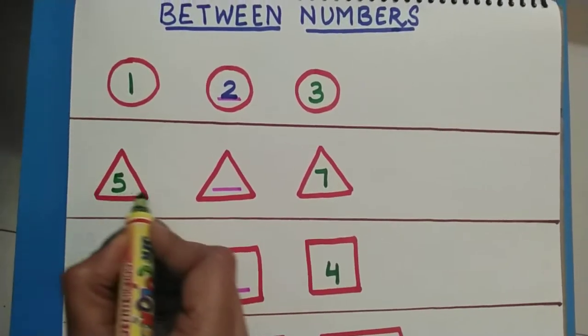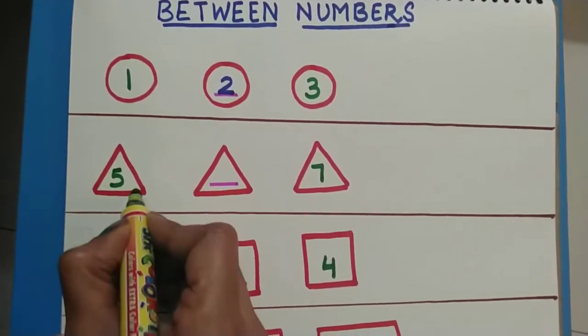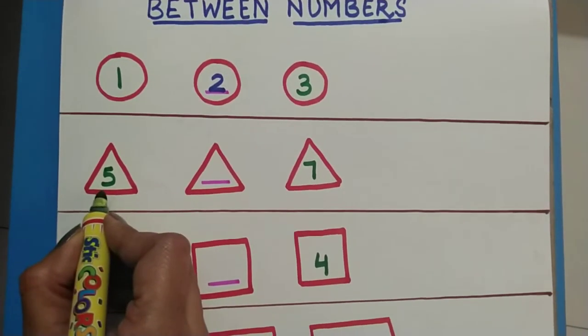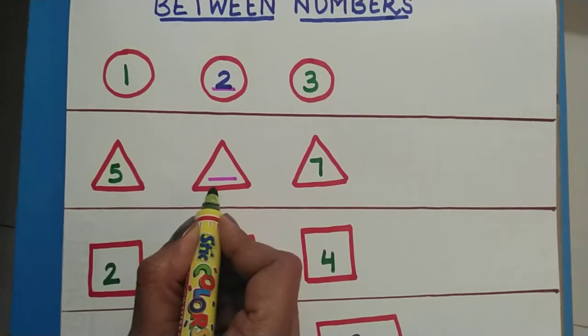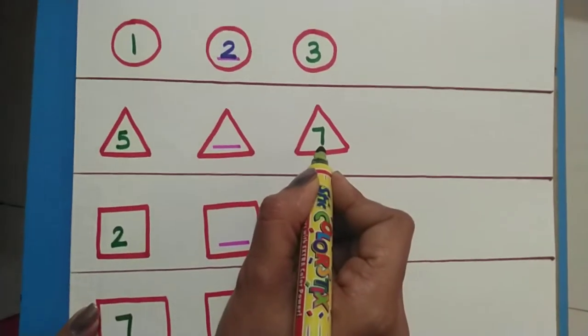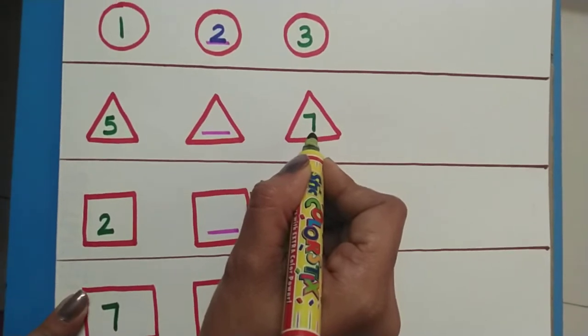Now see which shape is this? Excellent. This is a triangle. And which number is written here? Very good. Five. And no number is here. And now which number is here? Seven. Let's start counting and write.